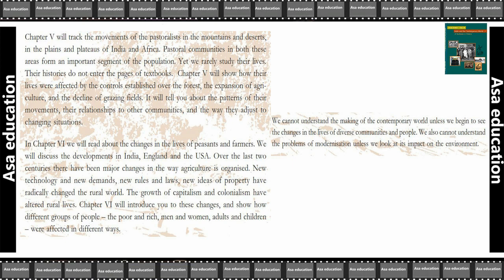The growth of capitalism and colonialism have altered rural lives. Chapter 6 will introduce you to these changes and show how different groups of people — the poor and rich, men and women, adults and children — were affected in different ways. We cannot understand the making of the contemporary world unless we begin to see changes in the lives of diverse communities and people.